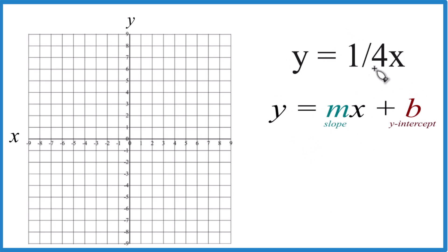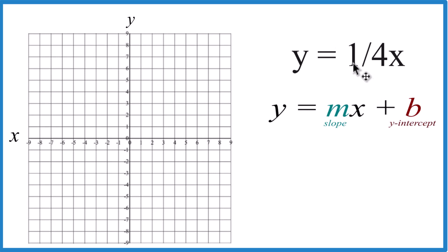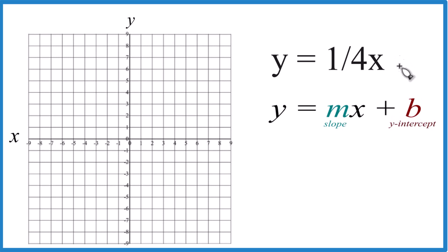So when we look at this, we have y equals 1 fourth x, and if we line it up, we don't have a b here. So we don't have our y-intercept. So we can just say plus zero. Now we have a y-intercept.